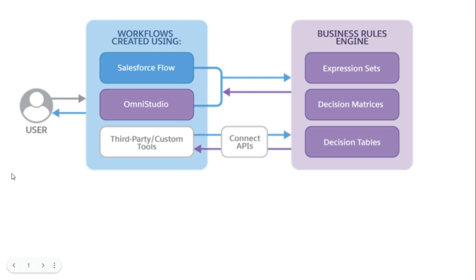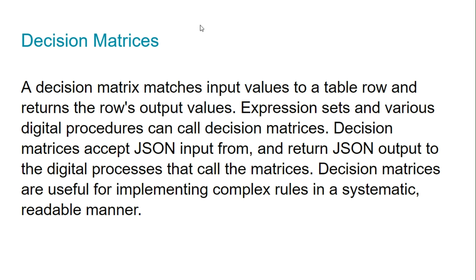The most complex use case is patient diagnosis. For example, you send some data — medical codes and symptom codes — and it calculates using a very complex algorithm for diagnosis of a disease or anything about a patient. So you can use it for very simple or very complex scenarios. Let me move on to decision matrices.